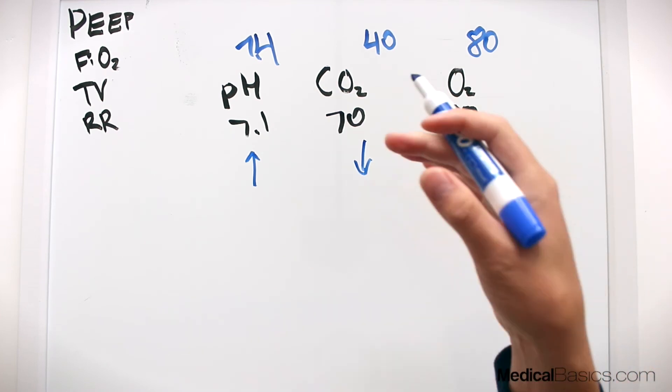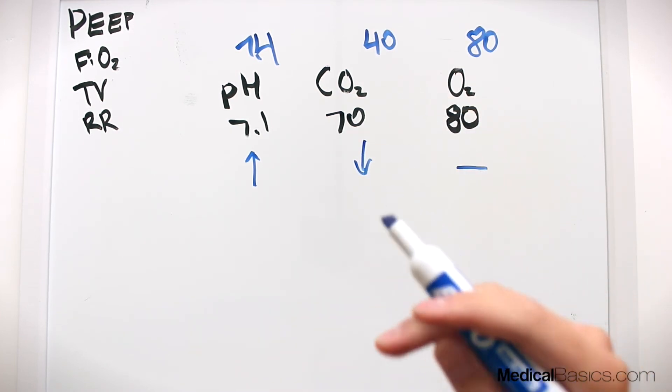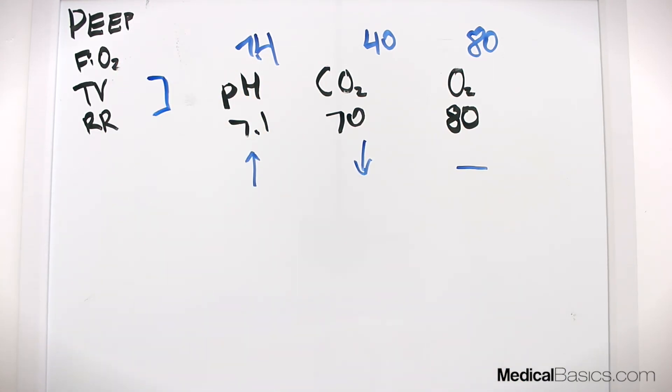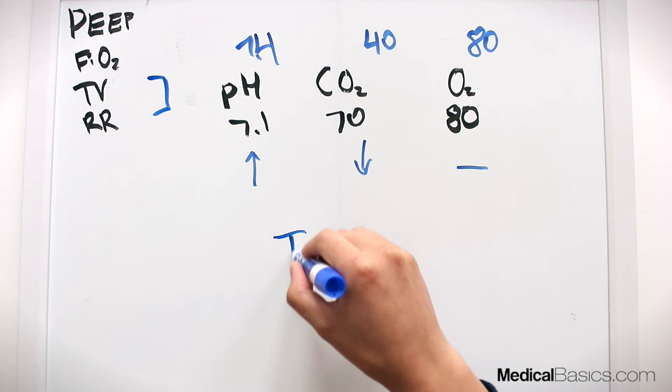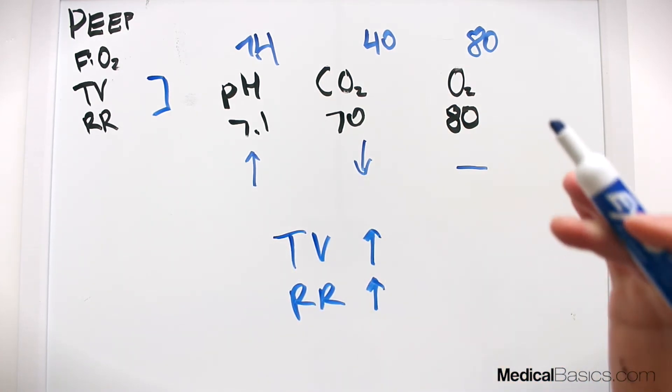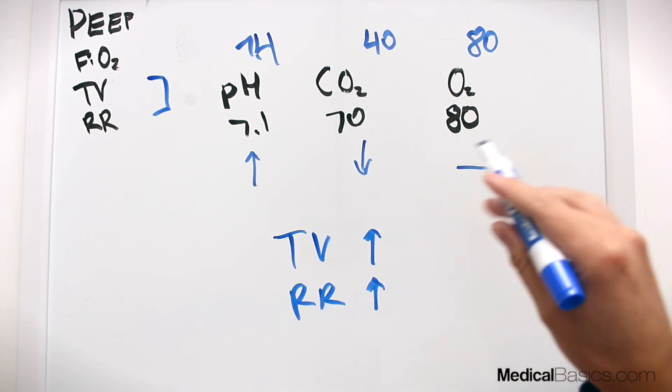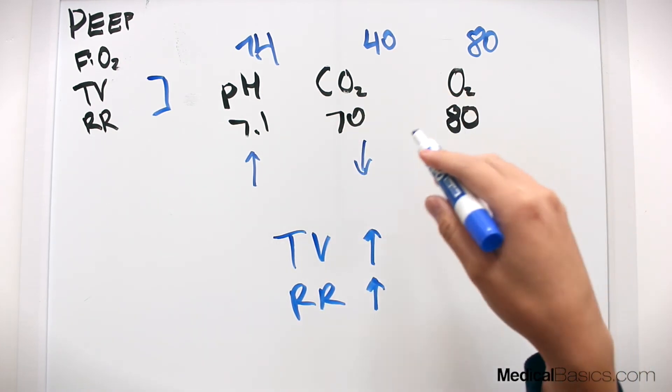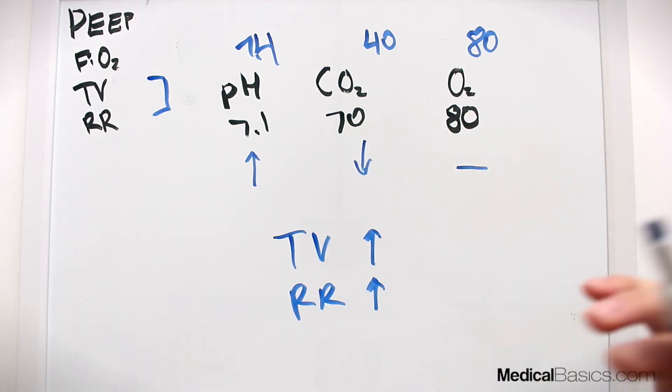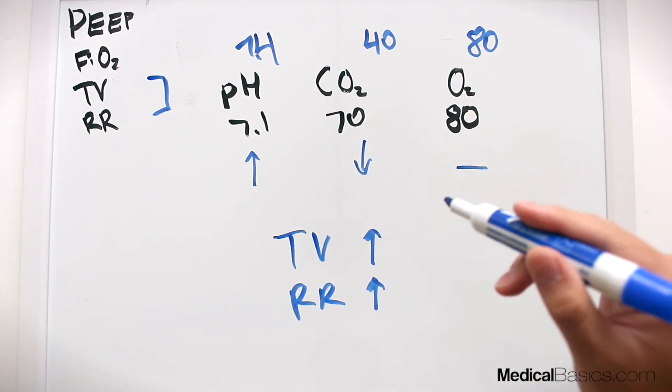Remember that our ventilation or our respiration is really going to be dictated by these two right here. So what we can do is we can increase our respiratory rate and increase our tidal volume. And that's going to make us blow off more CO2. It's going to decrease the CO2. And by doing that, it's going to increase our pH and make this a more balanced system.